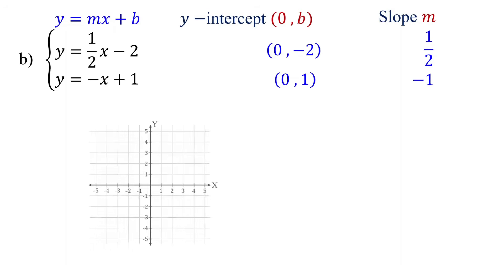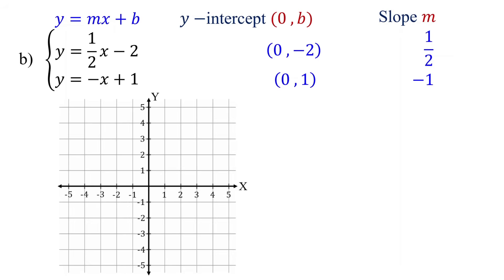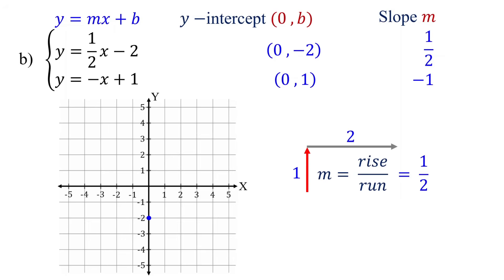Now, let's begin by graphing the first equation. First, plot the y-intercept, which is located at (0, -2). Remember that slope is the ratio of rise over run. Since the slope is 1/2, the rise is 1 unit up and the run is 2 units to the right. Now, starting from the y-intercept, go up 1 unit, then move to the right 2 units. Plot this as the second point.